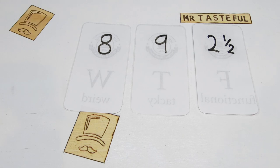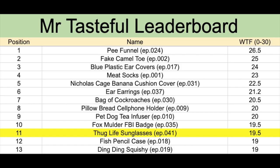Don't buy them. And over on the leaderboard, where fashion meets Chinese mass market affordability, the Thug Life sunglasses have 19 and a half points in position 11. Just above, we have the pet dog tea infuser and the Fox Mulder FBI badge. And just below, the fish pencil case and ding ding squishy.